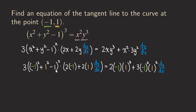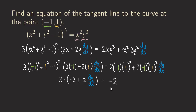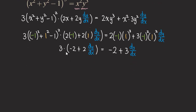Simplifying: (-1)² + (1)² - 1 = 1 + 1 - 1 = 1, and 1² = 1, so we get 3 times 1, which is just 3. Then we have (-2 + 2·(dy/dx)) on that side. On the right: 2(-1)(1)³ = -2, and (-1)²·3(1)²·(dy/dx) = 3·(dy/dx). Distributing the 3 gives -6 + 6·(dy/dx) = -2 + 3·(dy/dx).